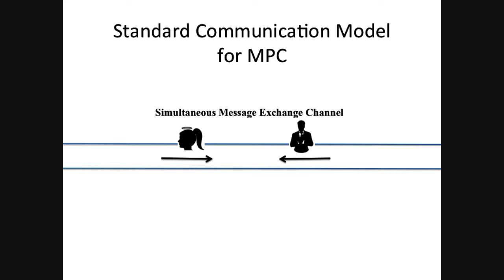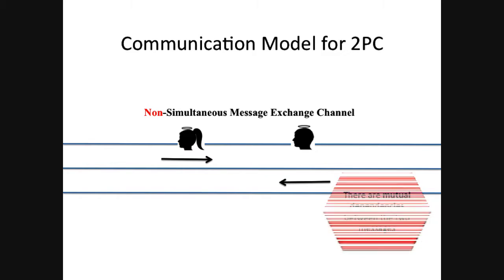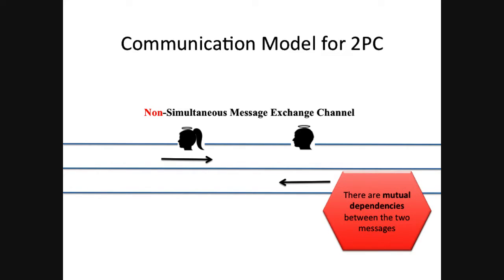This comes in sharp contrast to the two-party setting, where Alice sends a message, but Bob's message depends on Alice's message — he first has to receive it and then compute his reply. So there are mutual dependencies in this model, and this counts as two rounds.